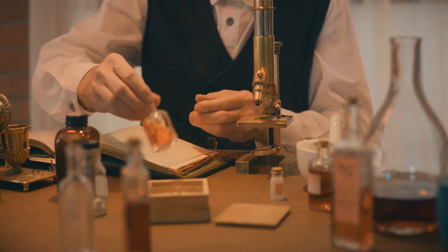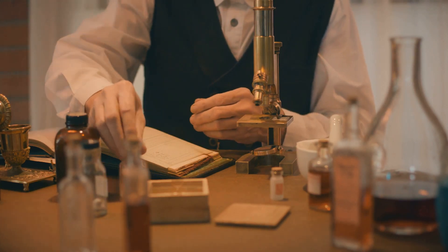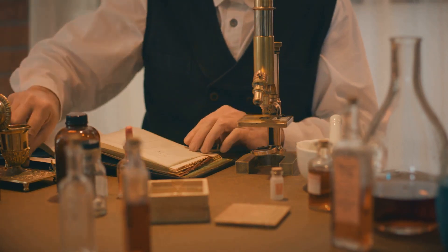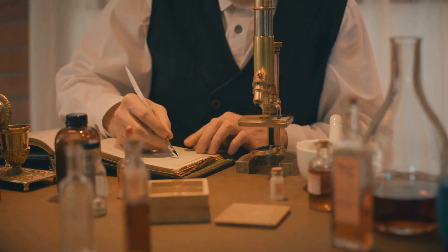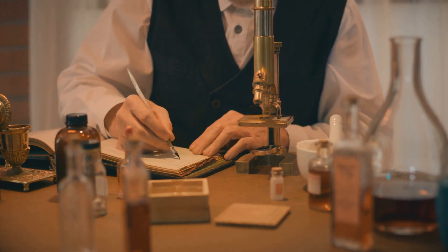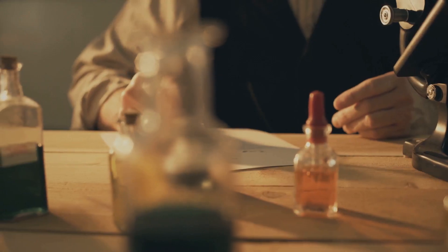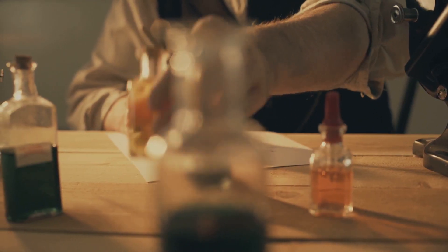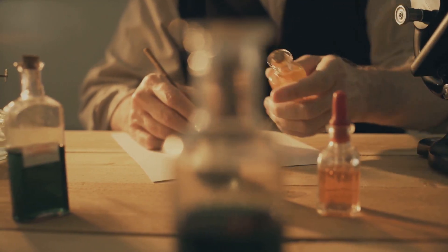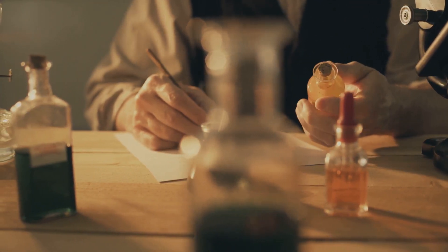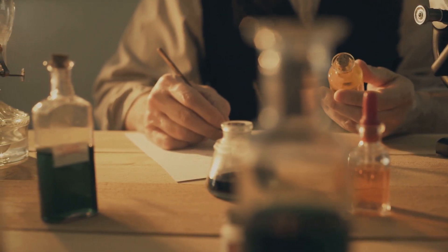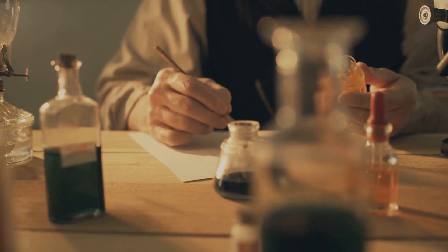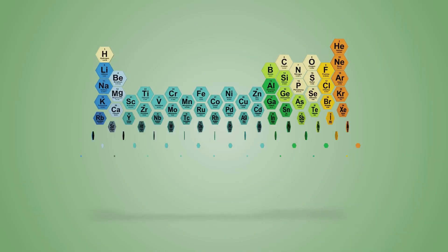Mendeleev started by writing the properties of each element on cards. He then began arranging and rearranging these cards. After much thought and contemplation, a pattern emerged. Mendeleev noticed that when he arranged the elements in order of increasing atomic weight, certain types of elements regularly occurred. This was a groundbreaking revelation.